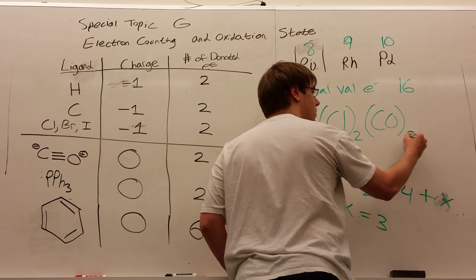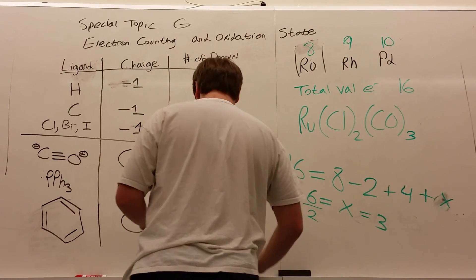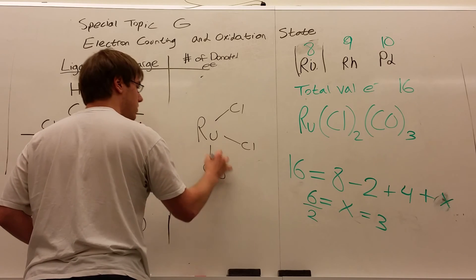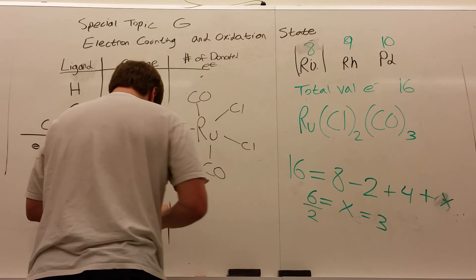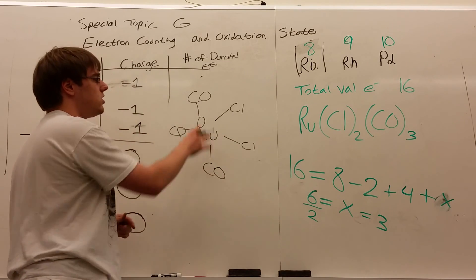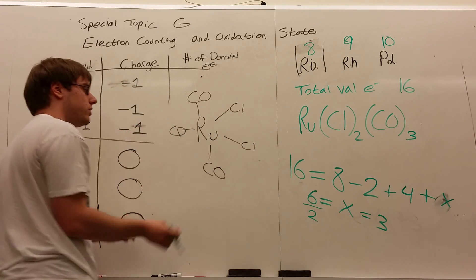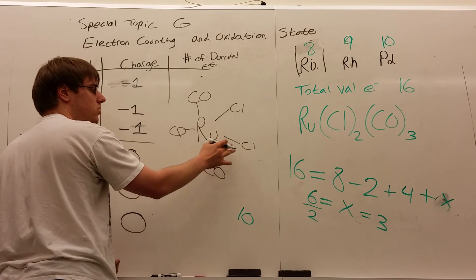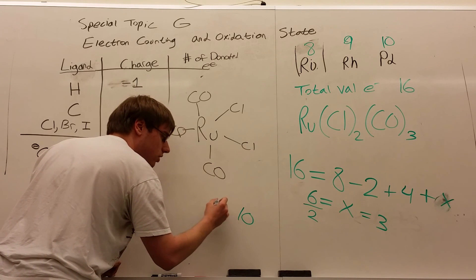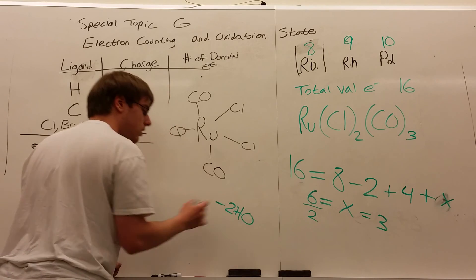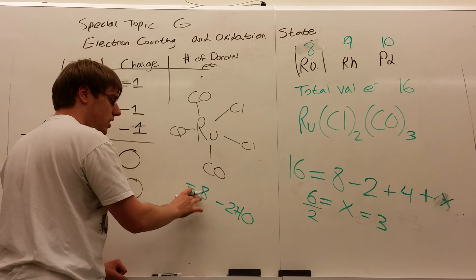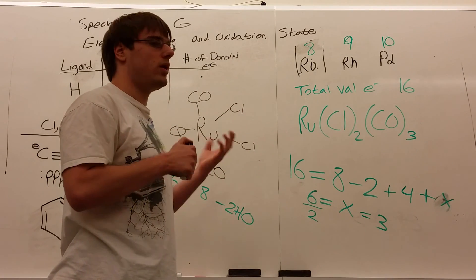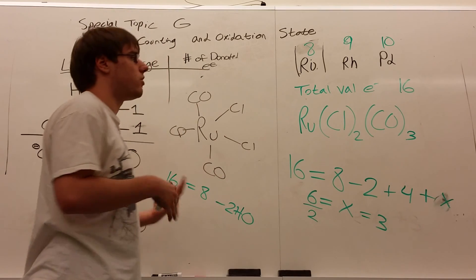We can double-check by drawing it out: Ru with two chlorines and three C≡O ligands. Each bond contributes 2 electrons — five ligands total gives 10 electrons from ligands. Oxidation state is plus two (two Cl each minus one, neutral molecule), so subtract 2. Ruthenium is in column 8, so: 8 − 2 + 10 = 16. It checks out. This fill-in-the-blank format is just another way of asking the same electron-counting question.